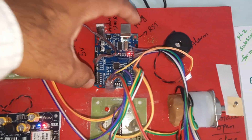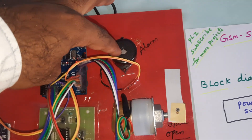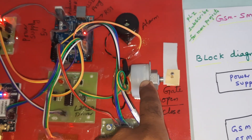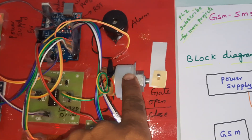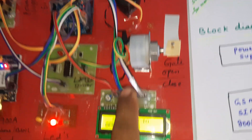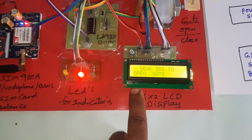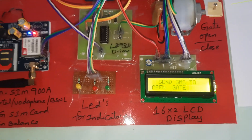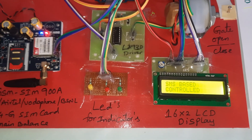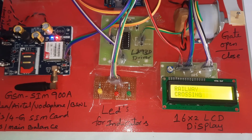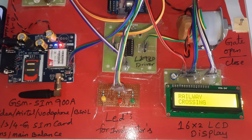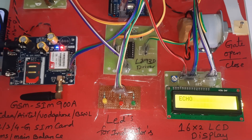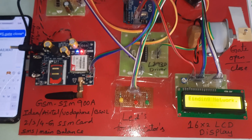Components summary: power supply board, Arduino Uno R3, one alarm, red LED, L293D driver IC, gate open/close circuit, and 16x2 LCD display. Here is the reset button — pressing reset. SMS-based controlled railway crossing GSM testing: connected, echo, finding network.